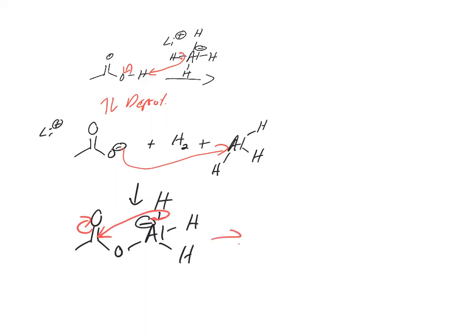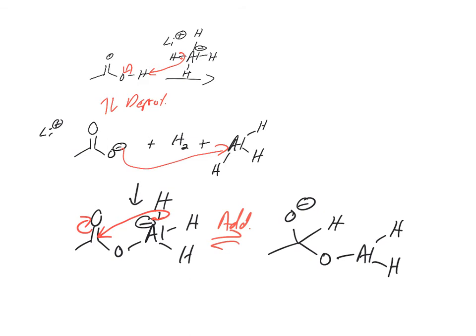H⁻ is going to react — we'll do that addition. Now we've got O⁻, we've got an H there, we've got oxygen, aluminum with two H's. So now we've made ourselves a tetrahedral intermediate. Because oxygen loves aluminum so much, it's actually going to do this elimination, and you're going to get an aldehyde, because you've added one hydrogen so far. And you're going to get out this O⁻ aluminum with H's.